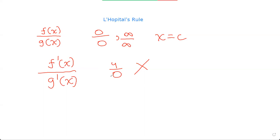So in order to use this rule, it's important that a few conditions are met. The first one is that g'(c) should not be equal to 0. If the denominator is 0, then the limit is undefined, so that should not be true.